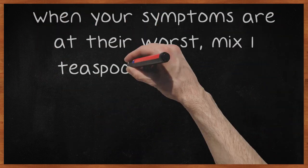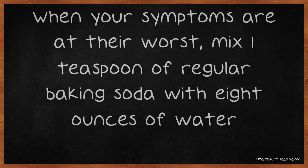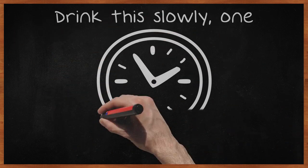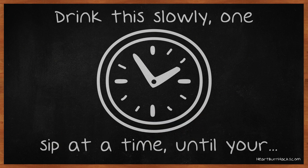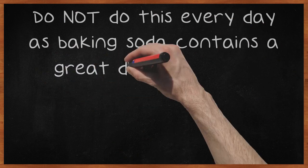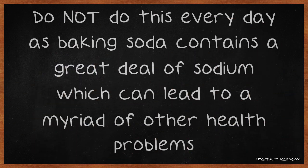When your symptoms are at their worst, mix one teaspoon of regular baking soda with eight ounces of water. Drink this slowly, one sip at a time, until your symptoms subside. Do not do this every day as baking soda contains a great deal of sodium which can lead to a myriad of other health problems.